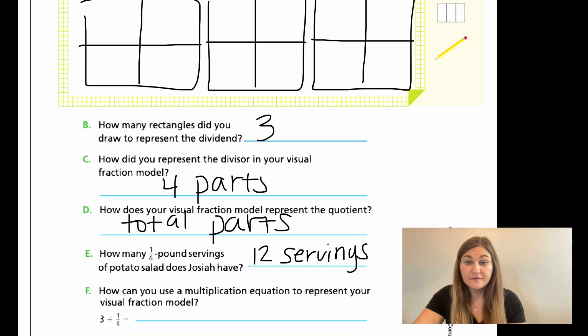And then for F, here's our final really bringing it home question. How can you use a multiplication equation to represent your visual fraction model? So three divided by one fourth is going to be the same thing as three times four equals 12. And I'm just going to explain really quick how we're doing this. And this is how I will be teaching it in the classroom.